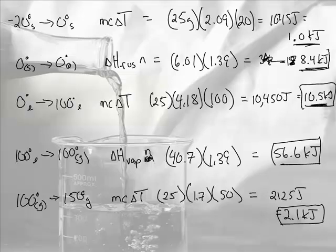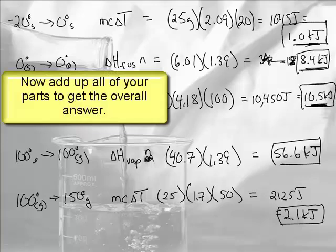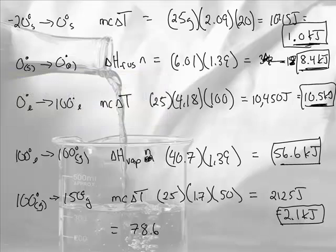Now we just add up the kilojoules. I'll put boxes around the numbers we need to add up, and Mr. Stamms will be fiercely adding them correctly. When we add all those box numbers up, the total energy it takes to take 25 grams from negative 20 all the way to 150 degrees is 78.6 kilojoules.